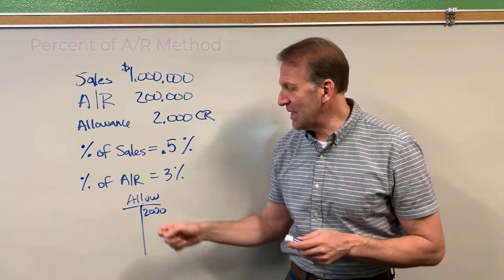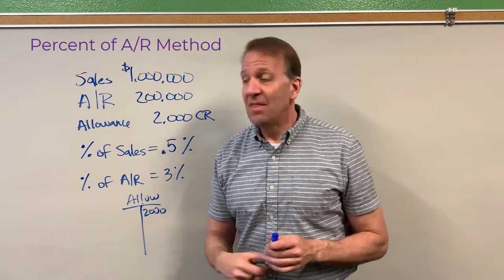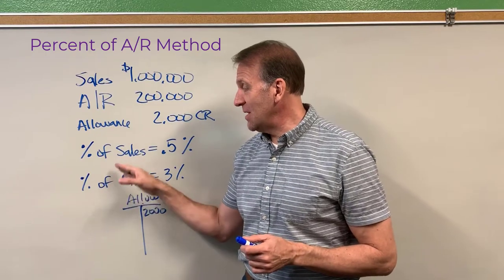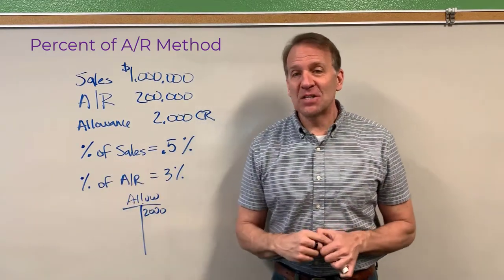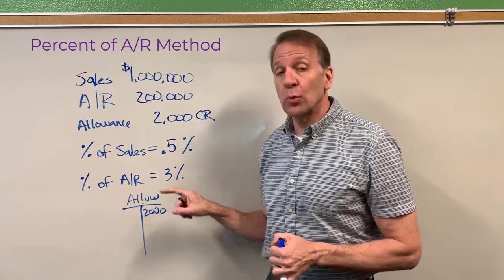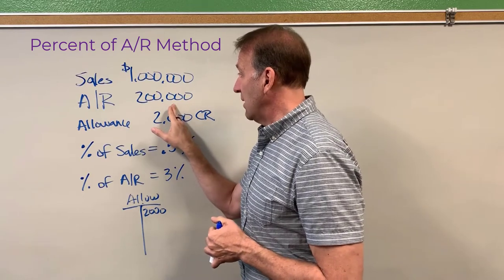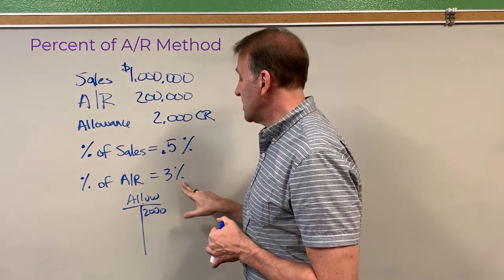Now in this video we're going to be looking at the percent of accounts receivable method. This method is different and you'll see how it's different. First of all, you can see here the percent of accounts receivable percentage that they're giving us is three percent. So what we're going to do is we're going to take our accounts receivable balance and multiply it by that three percent.